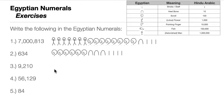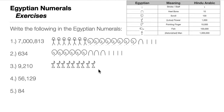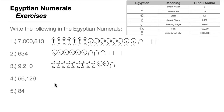For number three, 9,210: write the lotus flower nine times (9,000), two scrolls (200), one heel bone (10), and nothing for the units digit since it is zero.